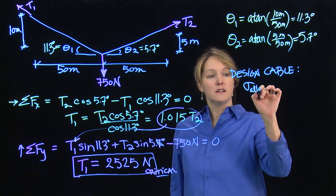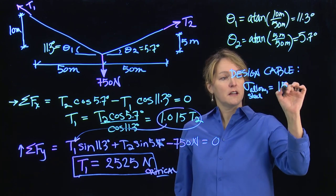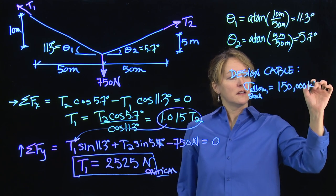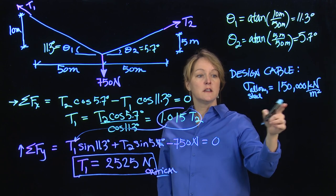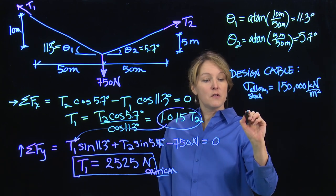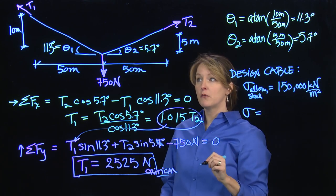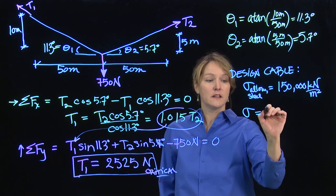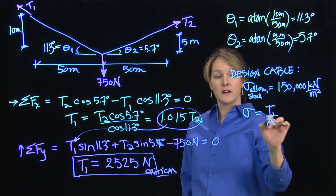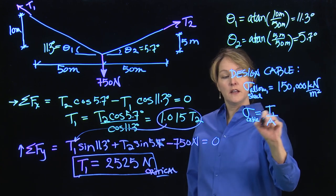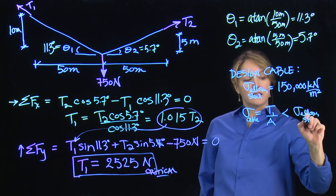I'm going to assume that I'm using a steel with an allowable stress—a certain allowable stress. I'm going to choose a fairly high allowable stress, 150,000 kilonewtons per meter squared, a fairly common allowable stress for steel. That's my allowable stress. And I know I want to keep my stress in the cable, so in this case it's T1. If I want to compute stress when I have a tension force, I just take the tension force, in this case T1, and divide by the cross-sectional area. That will give me the stress in the cable. And I know I want to keep that less than my allowable stress.